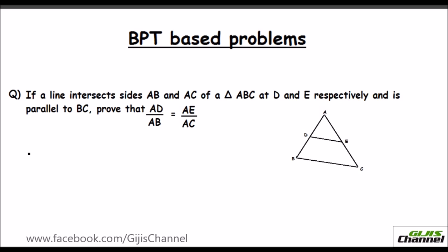So here the first question states, if a line intersects the side AB and AC of a triangle ABC at D and E, I have given the picture here. So that is a triangle ABC and this AB and AC is being intersected by DE, the line DE, respectively. And this DE is parallel to BC. You need to prove that AD over AB is equal to AE over AC. That is the first portion over the full portion is equal to this small portion over the full portion.